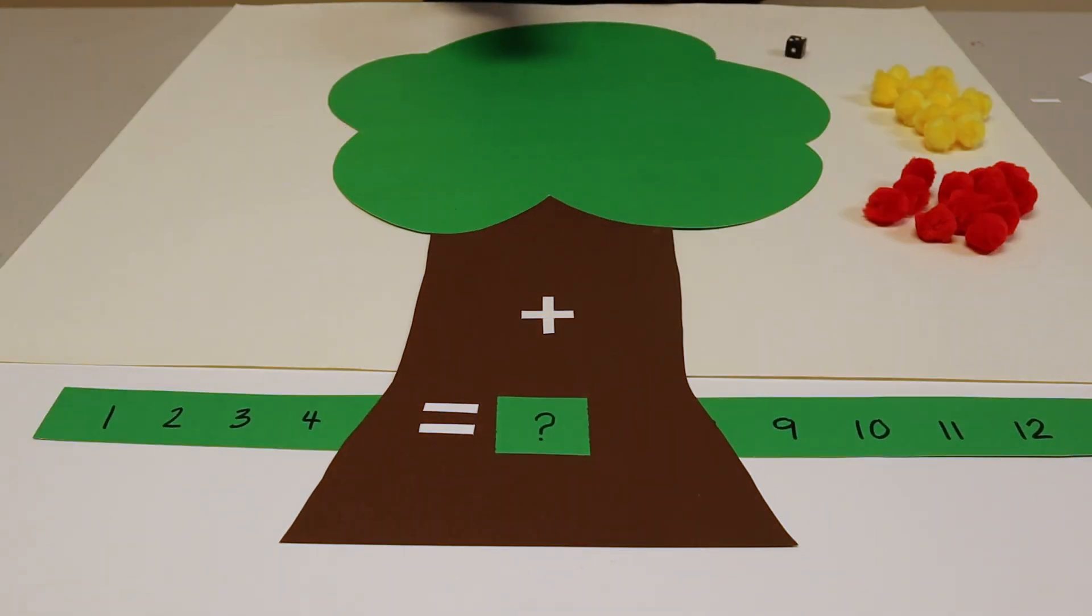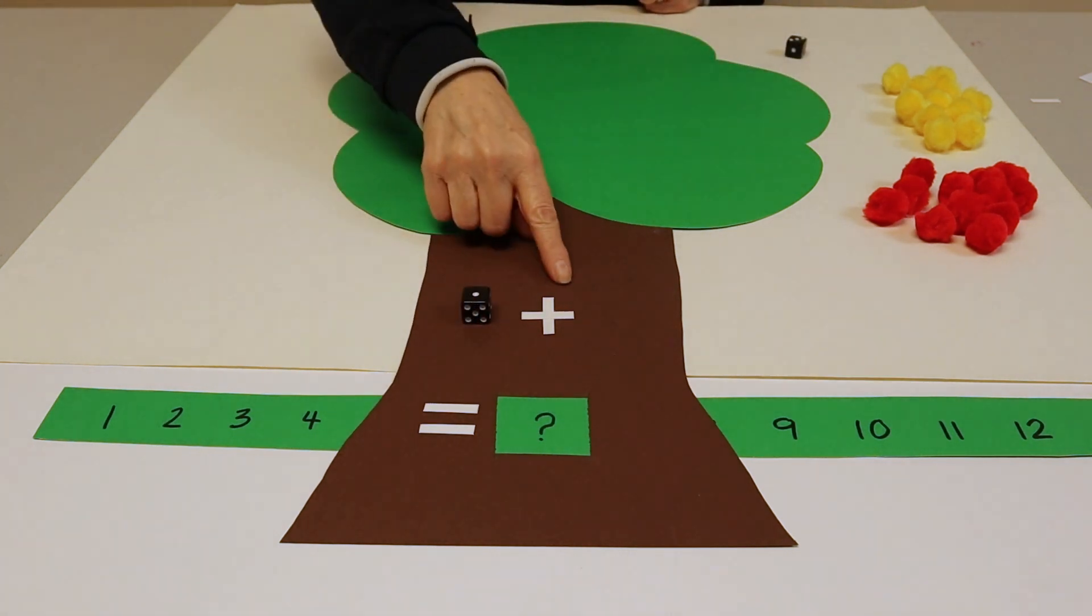First your little one will take one die and roll it and count out the corresponding number of apples and place on the tree. So one and place the die beside the plus sign.